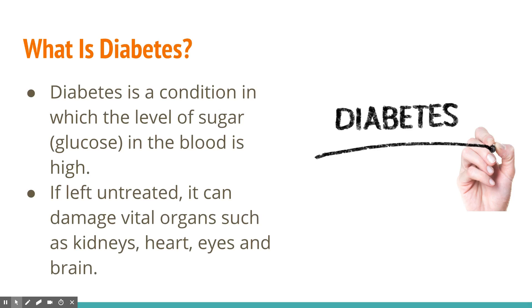In very simple terms, diabetes is a condition where the level of glucose in the bloodstream is elevated. We should use the term blood glucose rather than blood sugar, though they are often used synonymously. The problem with diabetes is not just elevated glucose but the fact that if left untreated it can damage vital organs such as the kidney, the heart, the eyes, and the brain, as well as the nerves and skin.